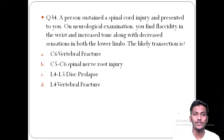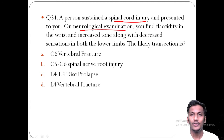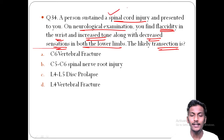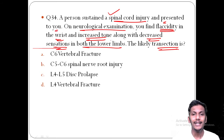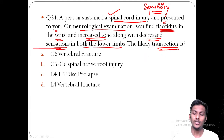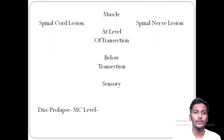Question 34: A person sustained a spinal cord injury. On neurological examination, there is flaccidity at the wrist, increased tone (spasticity) and decreased sensation in both lower limbs — both the motor and sensory components are affected. To determine the likely level of transaction, let's discuss how to differentiate spinal cord lesions from spinal nerve lesions.